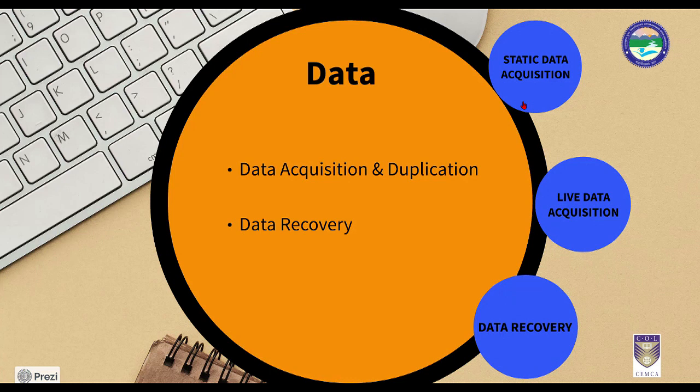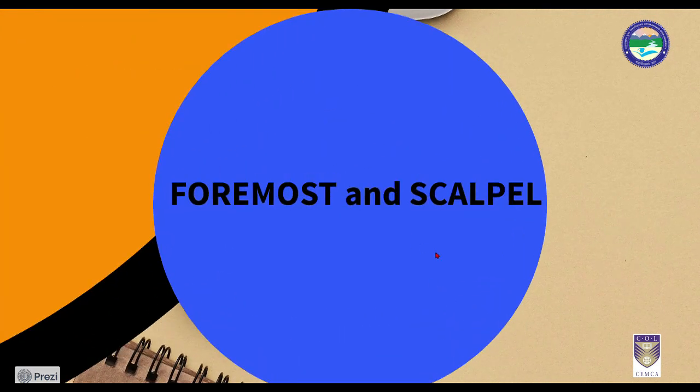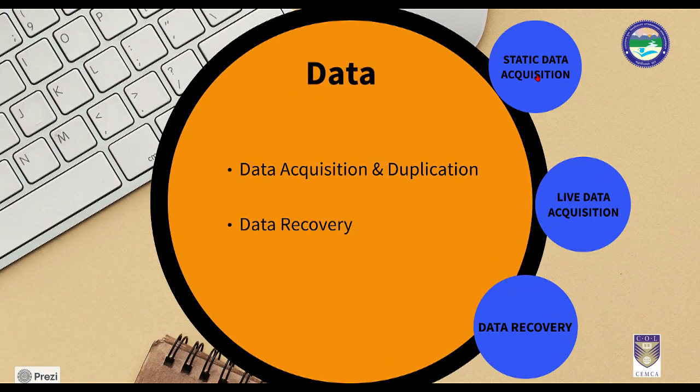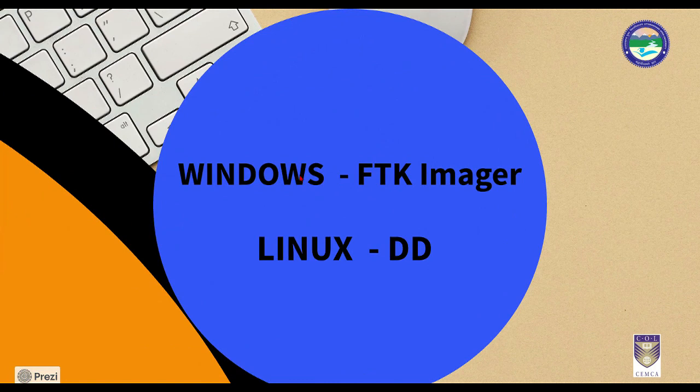In this module we are also going to learn about data recovery. Once you have captured evidences from a suspect's hard drive or RAM using live data acquisition, you need to find the critical information present inside those evidences with the help of data recovery tools — for example, Foremost and Scalpel. For static data acquisition we will use tools such as FTK Imager on Windows and DD on Linux. I am going to focus on both Windows and Linux.